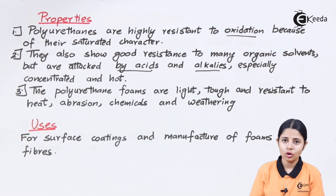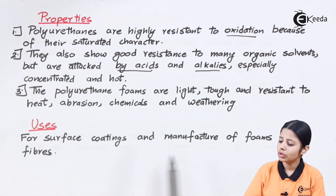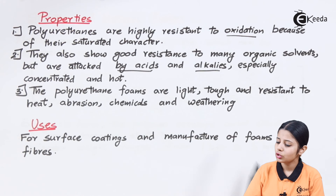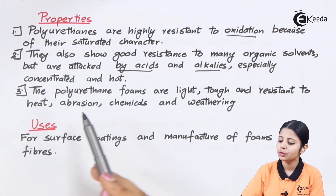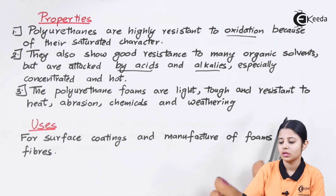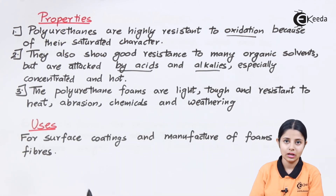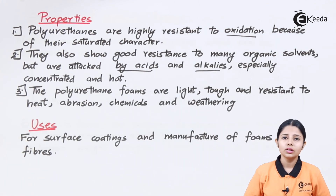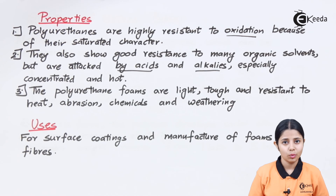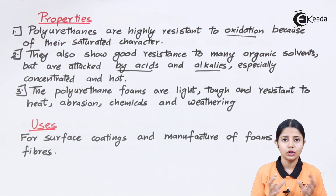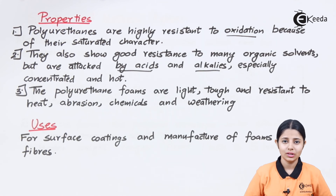The main use of polyurethane is for surface coatings and the manufacture of foams and fibres. Polyurethane foams are chosen for these applications because they are light, tough, and resistant to heat and abrasion. In this video we studied what polyurethane rubber is, the reactants that form it, the reaction leading to its polymerization, and its properties and uses.